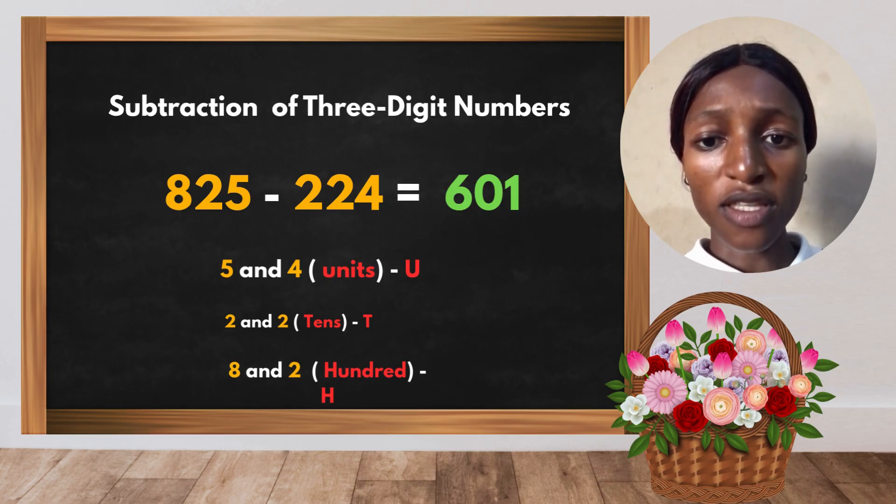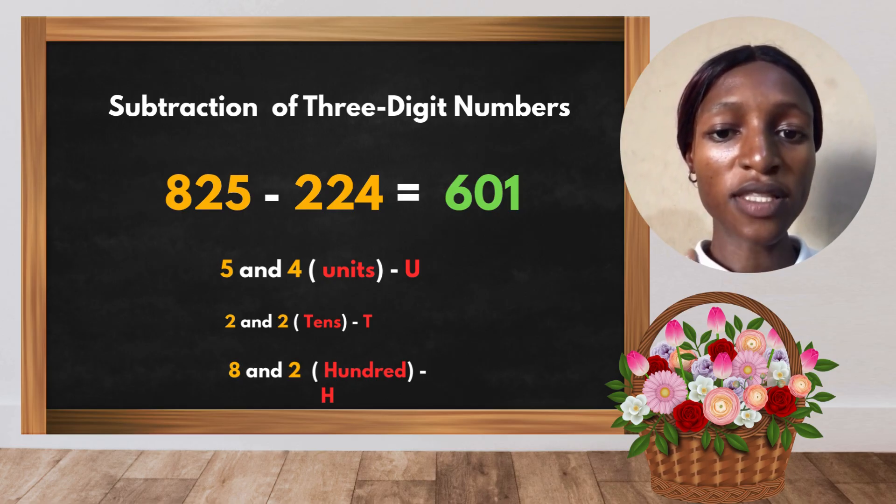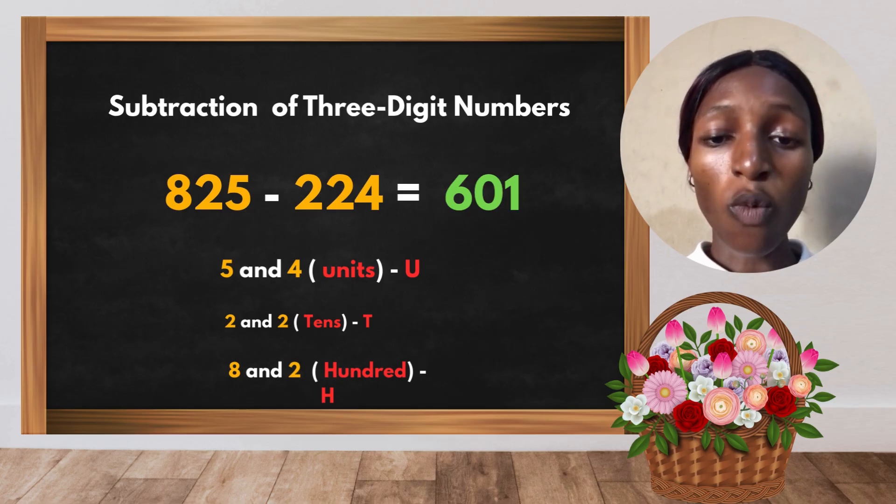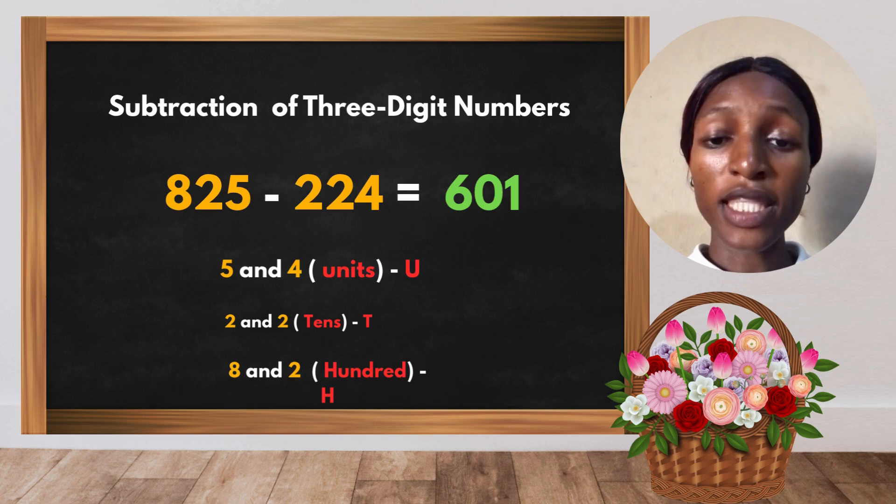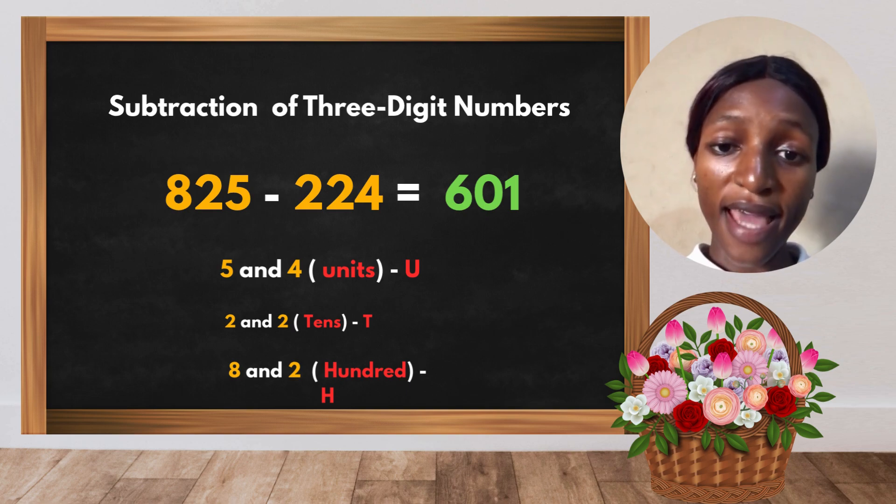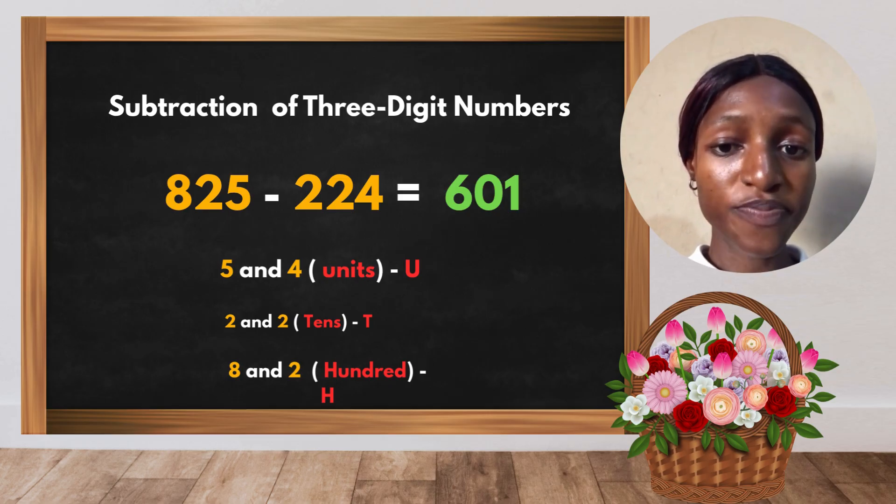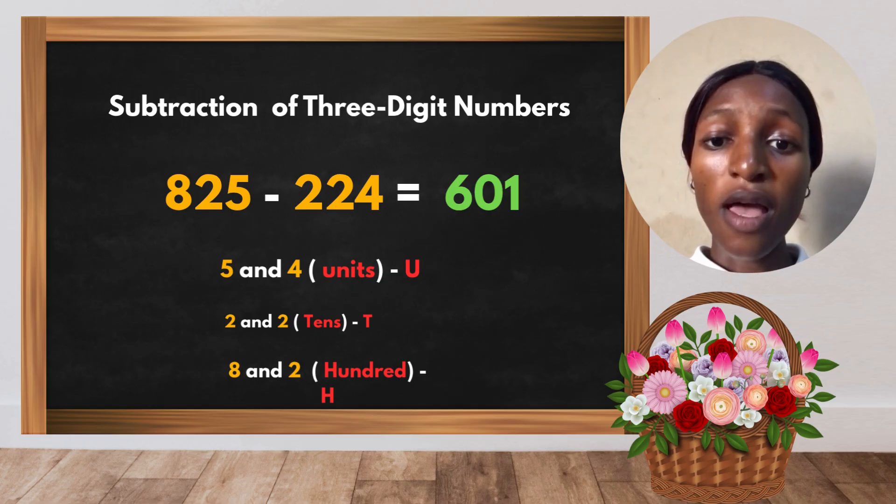When arranging, do not forget: start from the unit, tens, and hundred. The hundred in 825 is 8, the tens is 2, while the unit is 5. And also in 224, the hundred is 2, the tens is 2, and the unit is 4. So when calculating, I start from the unit: 5 minus 4 is 1, 2 minus 2 is 0, and 8 minus 2 is 6.